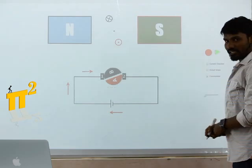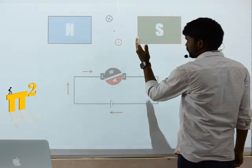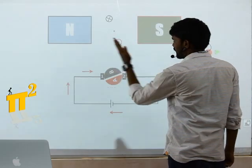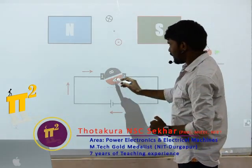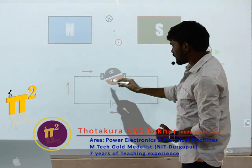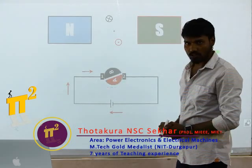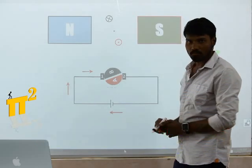If you notice, once this red conductor is crossing this middle region - previously the conductor was here, now it is here. Previously this red part was in connection with brush one, now this red part is in connection with brush two.